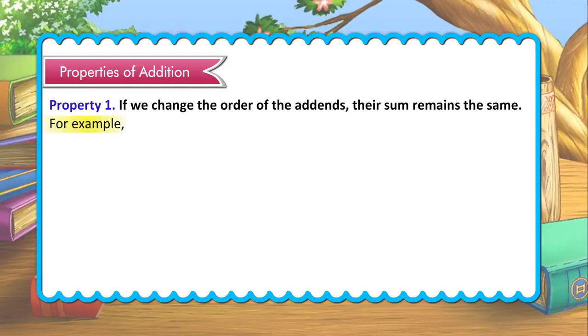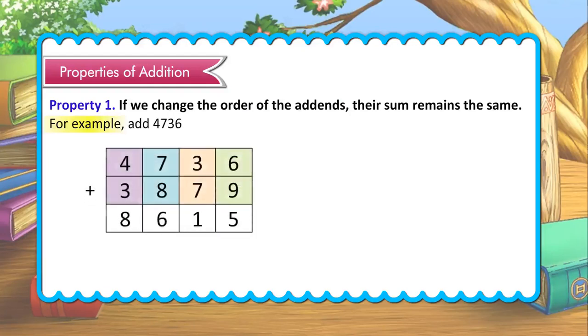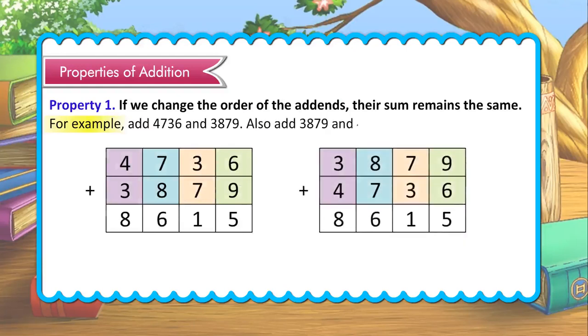For example, add 4736 and 3879. Also add 3879 and 4736.